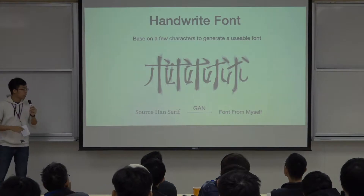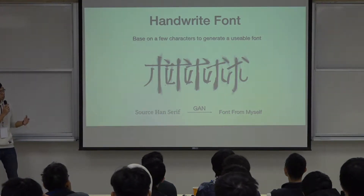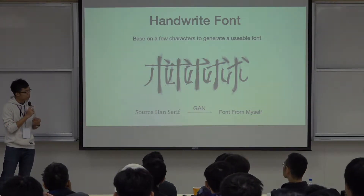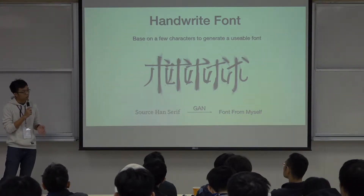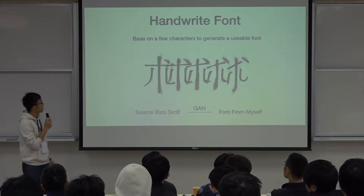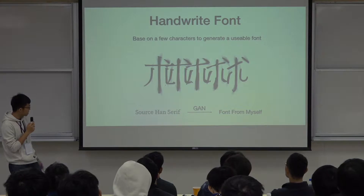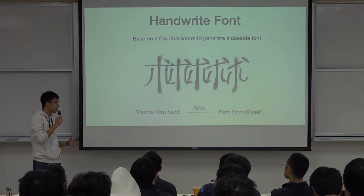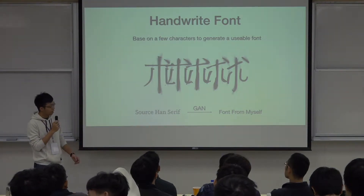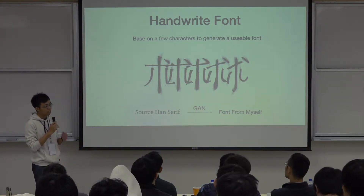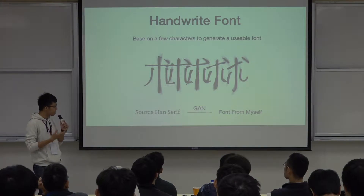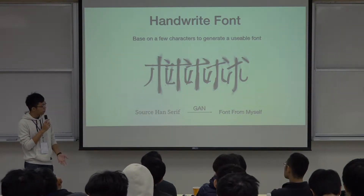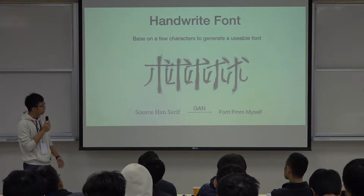So here we have two problems. The first problem is that the quantity of Chinese characters is too large. The second problem is we want to create a font where the same character can have multiple appearances, just like real handwriting. Our idea is to use a few characters to generate a usable font. The Source Hand series has at least 20,000 characters, but I only have 1,000 characters in my handwritten font. So if I can use those to generate my handwriting style on the Source Hand series, I can automatically generate 20,000 characters in my own style.